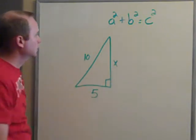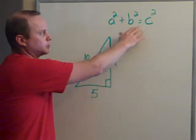We're still working on Pythagorean's Theorem, and here's our theorem: A squared plus B squared equals C squared.